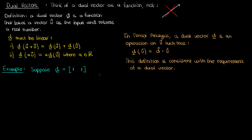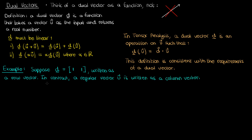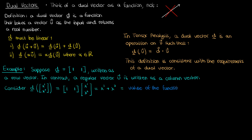Suppose my dual vector d is given by the components 1 and 1. By convention you write the dual vector d in the form of a row vector, and you write a regular vector v in the form of a column vector. Let's operate d on a generic two-dimensional contravariant vector with components x super 1 and x super 2 — remember superscripts are indices, not powers. This gives us the product of the row vector [1, 1] and the column vector [x¹, x²], which equals x super 1 plus x super 2 by simple matrix multiplication.